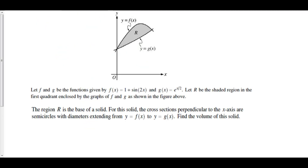Let f and g be the functions given by f equals 1 plus sine of 2x and g equals e to the x over 2. Let R be the shaded region in the first quadrant enclosed by the graphs of f and g. The region R is the base of the solid. For this solid, the cross-sections perpendicular to the x-axis are semicircles with diameters extending from y equals f to y equals g. Find the volume of this solid. Let's first construct one of our semicircles.